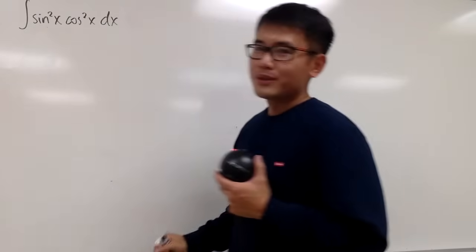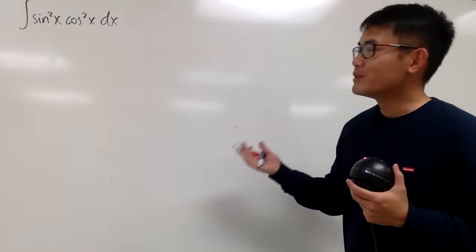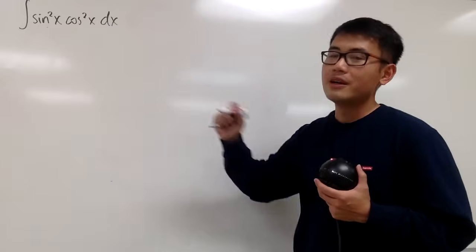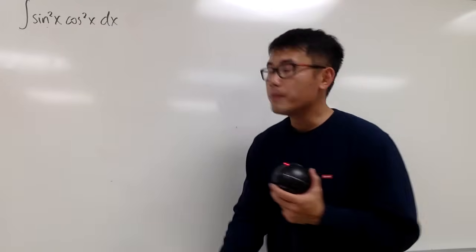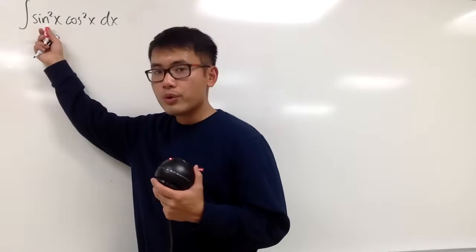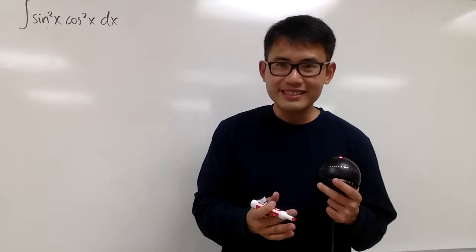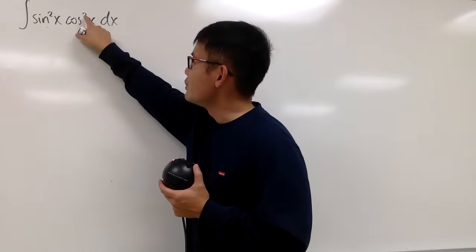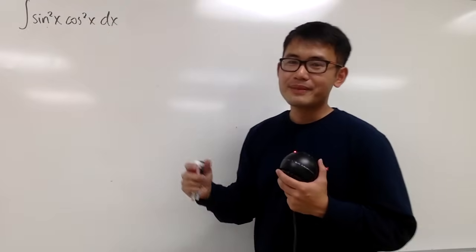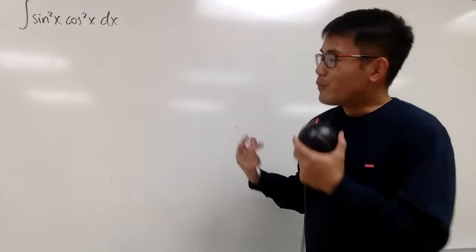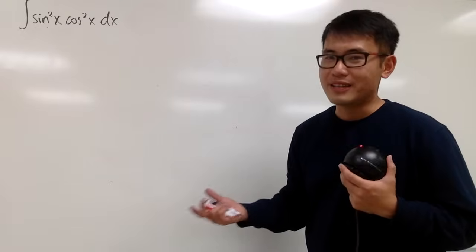And lastly, I want to tell you guys that we cannot use u substitution right here, neither. Because, for example, if you want to let u equal to sine x, the derivative of sine x is cosine x. But here you have cosine to the second power x, right? So you will see that it's, unfortunately, they cannot cancel each other out nicely.